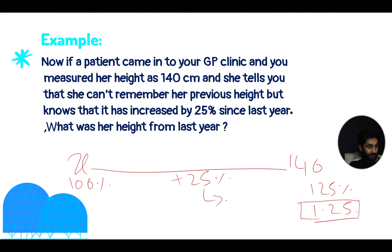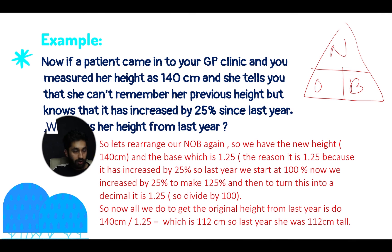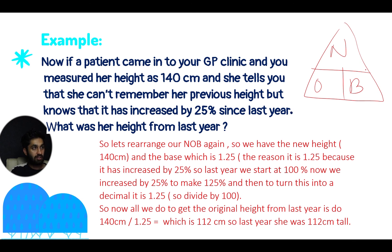So this is our base. Using NOB once again, if we rearrange NOB, we have the new height which is 140 and the base which is 1.25. The reason it is 1.25, as I mentioned before, it's increased by 25% since last year. So we start at 100%, now we increase by 25% to make 125%, and then to return this to a decimal it is 1.25. Now all we do is to get the original height from last year: do 140 divided by 1.25, and that should give us 112. So last year she was 112 centimeters tall.